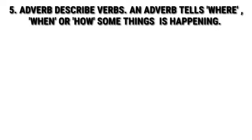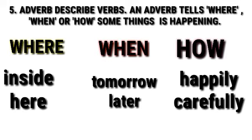Number five: adverbs describe verbs. Adverbs tell where, when, or how something is happening. Where: inside, here. When: tomorrow, later. How: happily, carefully.